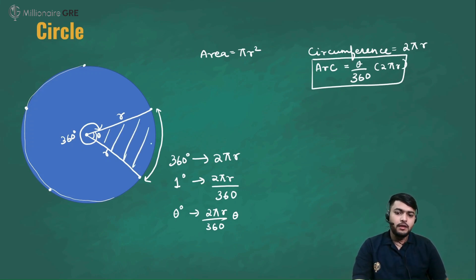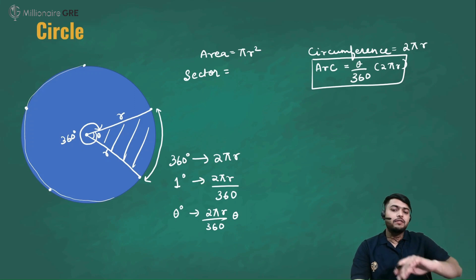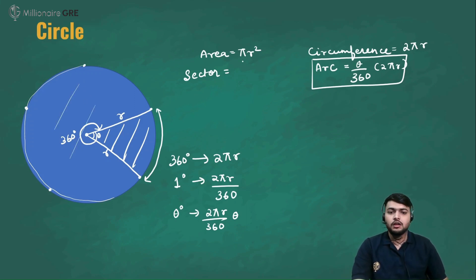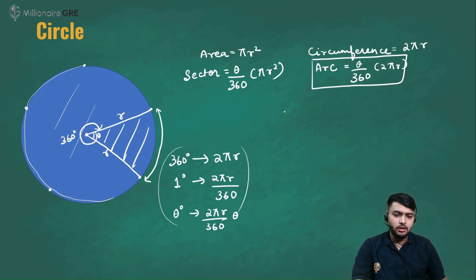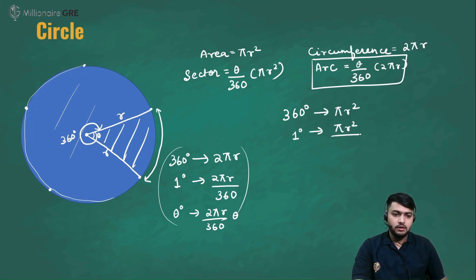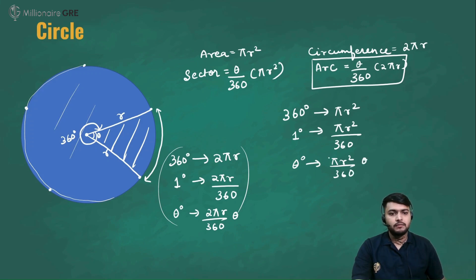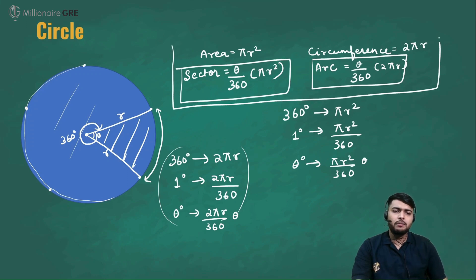The region enclosed by two radii and an arc is called a sector. A sector is a part of the total area of the circle. The area of a sector is (θ/360) × πr². Using the same unitary method: if the total angle is 360°, area is πr²; if the angle is 1°, area is πr²/360; if the angle is θ°, area is (θ/360) × πr². These are the four fundamental formulas we need to know.